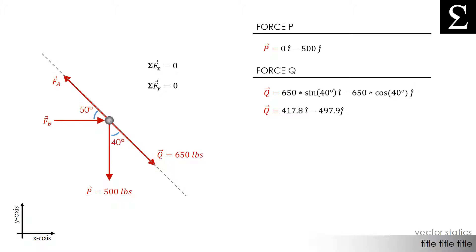So let's take a look at force A. It has components in the negative x direction and the positive y direction. FA would be equal to the magnitude of FA times the cosine of 50 degrees in the positive y direction.